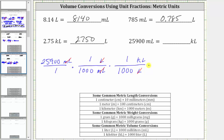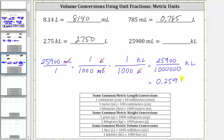So now we multiply. In the numerator, we have 25,900. In the denominator, we have 1,000 times 1,000, which is 1,000,000. The units are now kiloliters. So to finish, we have to find this quotient. 25,900 divided by 1,000,000 is equal to 0.0259. We have 0.0259 kiloliters.